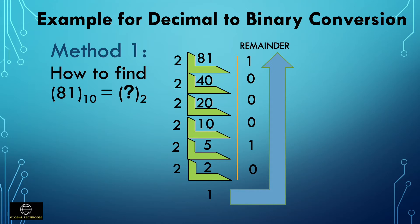Then divide 40 by 2 — remainder is 0, so the second digit from the right is 0. Then divide 20 by 2 — answer is 10 with remainder 0. Next divide 10 by 2 — answer is 5 with remainder 0. Next divide 5 by 2 — answer is 2 with remainder 1. Then divide 2 by 2 — remainder is 0. Then 1 divided by 2 gives 0 with remainder 1. So assembling the remainders gives you 1 0 1 0 0 0 0 1.